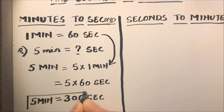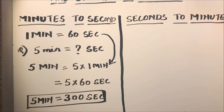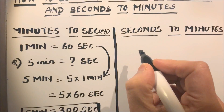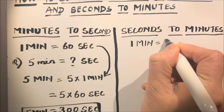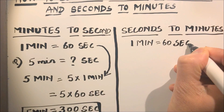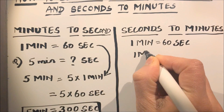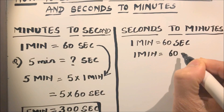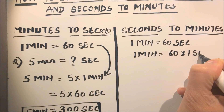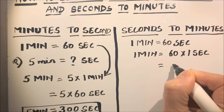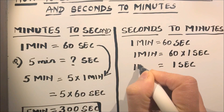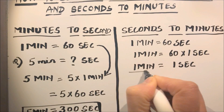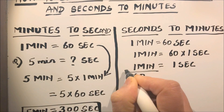Now we will do seconds to minutes conversion. We follow the basic relation: one minute is equal to 60 seconds. From this, we can write one minute equals 60 times one second. Then we find one second in terms of minutes: one second is equal to one over 60 minutes.